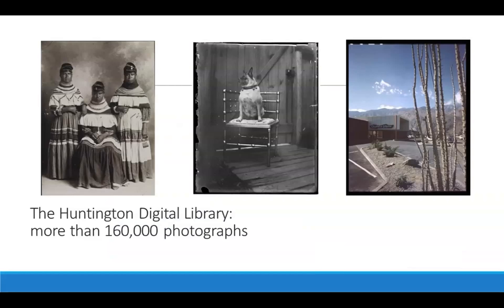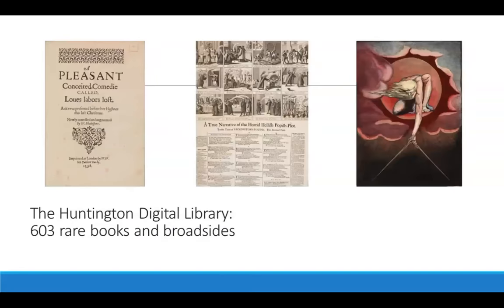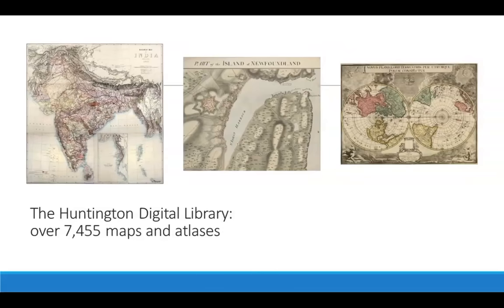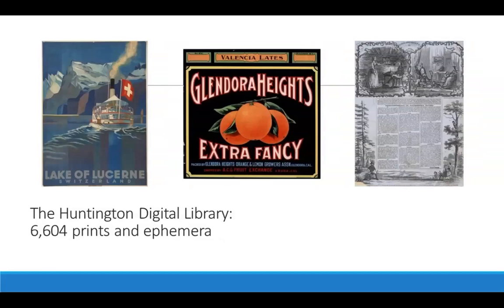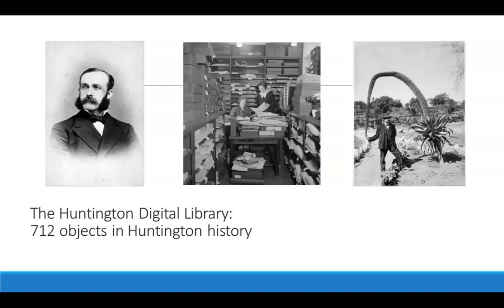There are currently over 230,000 objects, of which 160,000 are photographs. 603 are rare books and broadsides. We have over 7,455 maps and atlases, over 2,364 manuscripts — most are letters, but we also have items such as the autobiography of Franklin and drawings from explorers. We have 6,604 prints and ephemera — everything from posters to fruit crate labels to broadsides and letter sheets. We also have 712 objects from Huntington history, including Henry Huntington himself. This is important as we are celebrating our 100th anniversary this year.